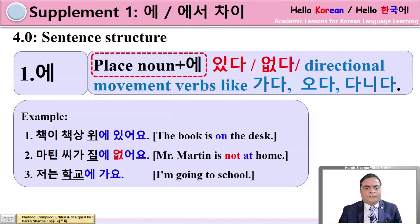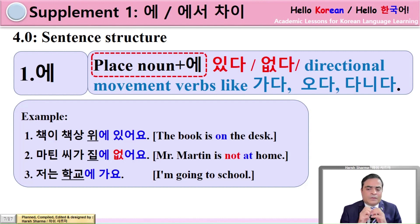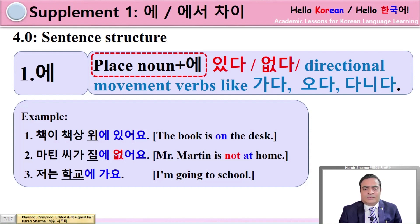To use 에 and 에서 correctly, we have to understand the sentence structure first. From the sentence structure, we can select the right marker. First, check the sentence structure of 에. Whenever we use the particle 에 with a place noun, it must be followed by 있다 (ITTA) or 없다 (OPTA), or the directional movement verbs like 가다 (KHADA), 오다 (ODA), 다니다 (DANIDA). If we are using any other verb after 에, then that sentence is incorrect. Please understand this statement very carefully. If you are able to understand this, you can use the 에 marker without any problem — there will be no errors.